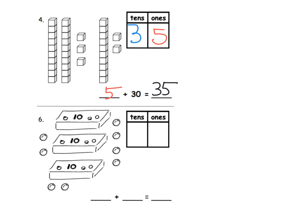It doesn't ask, but what would our number bond look like if we had 35 right here? It would look like 30 and 5. So we're just constantly practicing all these different ways to represent the same number.